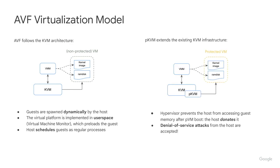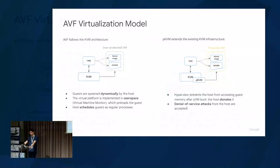With PKVM we simply extend this model by adding a protected hypervisor within KVM, so the interface to the VMM remains mostly unmodified. The big difference is that once the guest starts running, the hypervisor — through the use of the MMU — prevents the VMM, or the host, from accessing the memory that was donated to the guest.